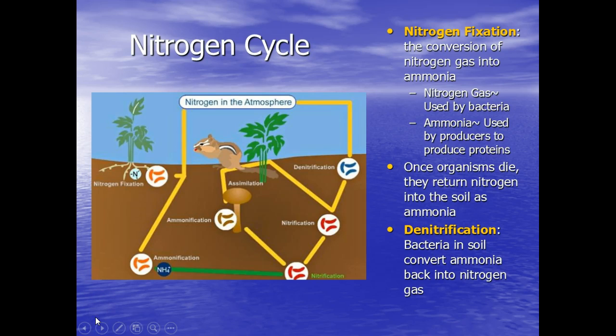Next up is the nitrogen cycle. It has all aspects of the atmosphere and land just like the carbon cycle. The only difference is the nitrogen cycle highly relies on bacteria. So we have atmospheric nitrogen gas that gets taken up by bacteria that's found in the soil. And that bacteria converts the gas from gas to ammonia.